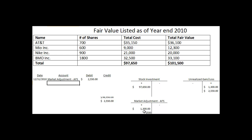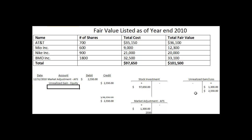And we credit unrealized gain — equity, because these are available-for-sale securities. The intent to sell them is not soon, so we bypass the gain from the income statement. It goes directly to the component of stockholders' equity. This marks to market the 2010 portfolio of available-for-sale securities.